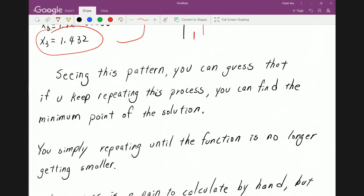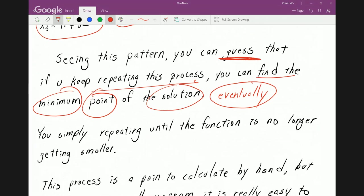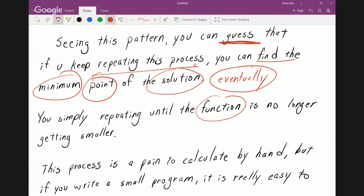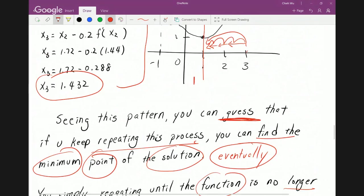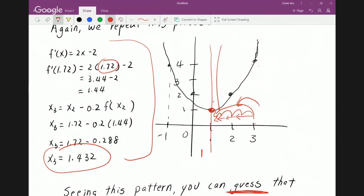Seeing this pattern, you can guess that if you keep repeating this process, you can find the minimum point of the solution eventually. You simply repeat until the function is no longer getting smaller. So what you can do is each time you repeat, you check whether the height is getting smaller and smaller. If the height is basically not getting smaller, it means that you've reached the bottom. You can't go any smaller.